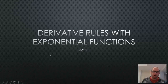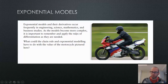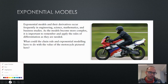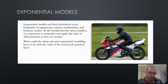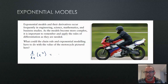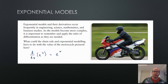To start off, I just want to remind you guys the derivative of the exponential function e to the power of x. e, the natural number, Euler's number — we have talked about that it is a special number such that the derivative of e to the power of x is itself, e to the power of x. So we're going to be making use of that today.